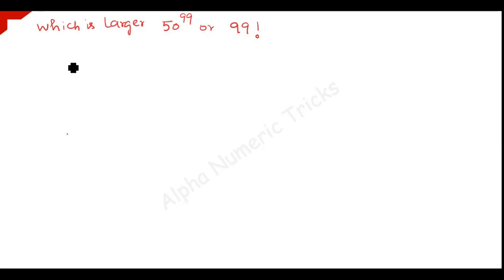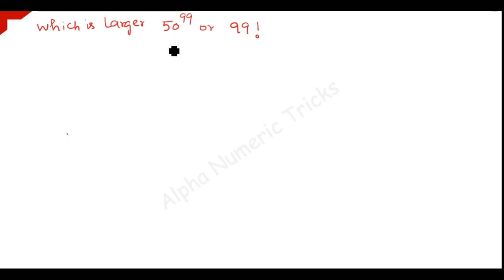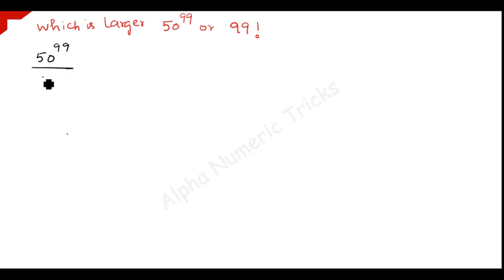Hi guys, now we are going to see a nice Olympiad problem: which is larger, 50 to the power 99 or 99 factorial? Here I am going to show you an easy trick to get the answer very quickly. For this we just divide one by another, that is 50 to the power 99 over 99 factorial.